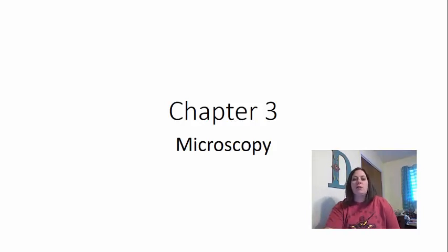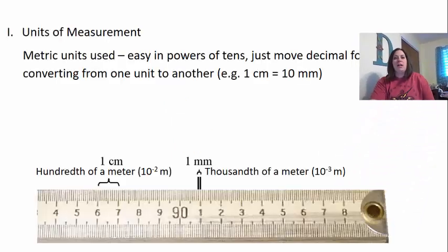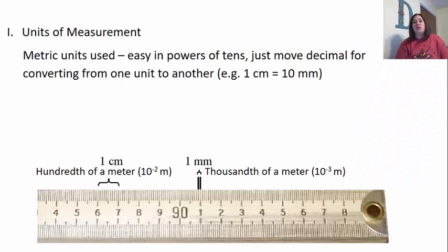As we start with chapter three, metric units are used for measurement in science classes. This is because it's a standardized way to measure. It's also very easy because it is going to be in powers of 10, so it's really easy to do 10 times 10 times 10 — you just move the decimal.